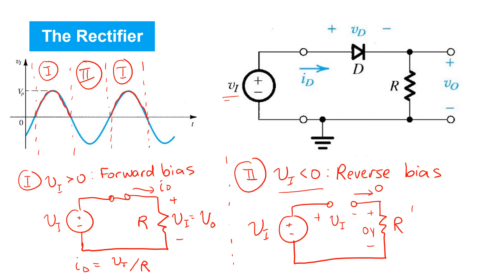Whenever we are in case two, we see that the output voltage vo is exactly equal to zero. So that's the case whenever vi is less than zero.